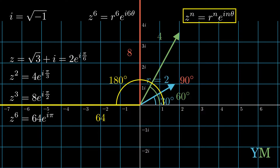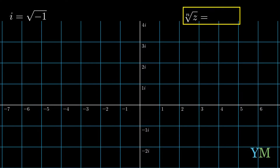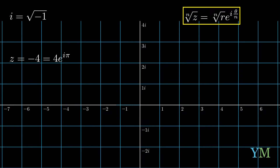Now let's expand our formula to the nth root of z. We receive the nth root of r times e to the i theta over n. To understand this better, let's use the specific example z equals minus 4. Notice that minus 4 is an algebraic presentation — it means 4 steps to the left, 0 steps upward or downward. It's not a polar presentation. In polar form, its length is 4 and its angle is 180 degrees, or pi. Basically the number 4 times e to the i pi.